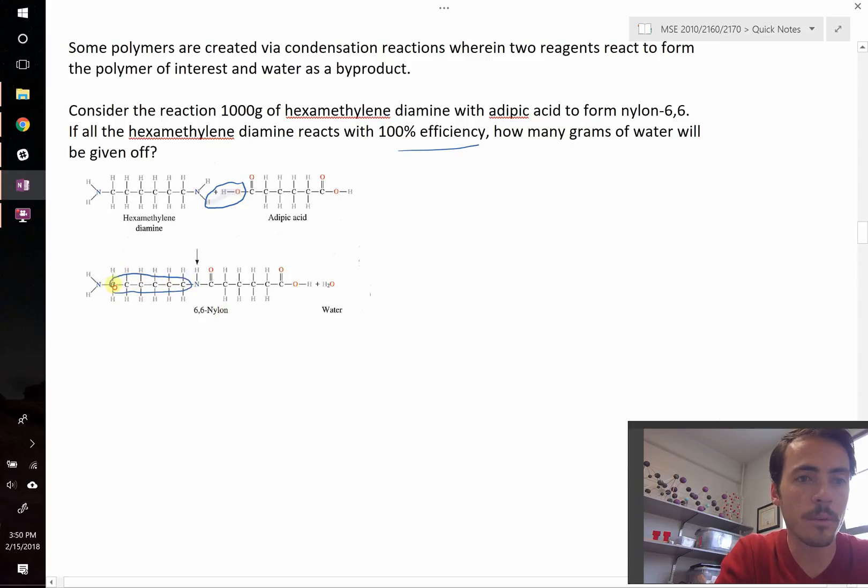5, 6 carbons there, and then on this part of the chain, it also has 6 carbons. So the short name, they call it nylon-6-6 because of these.